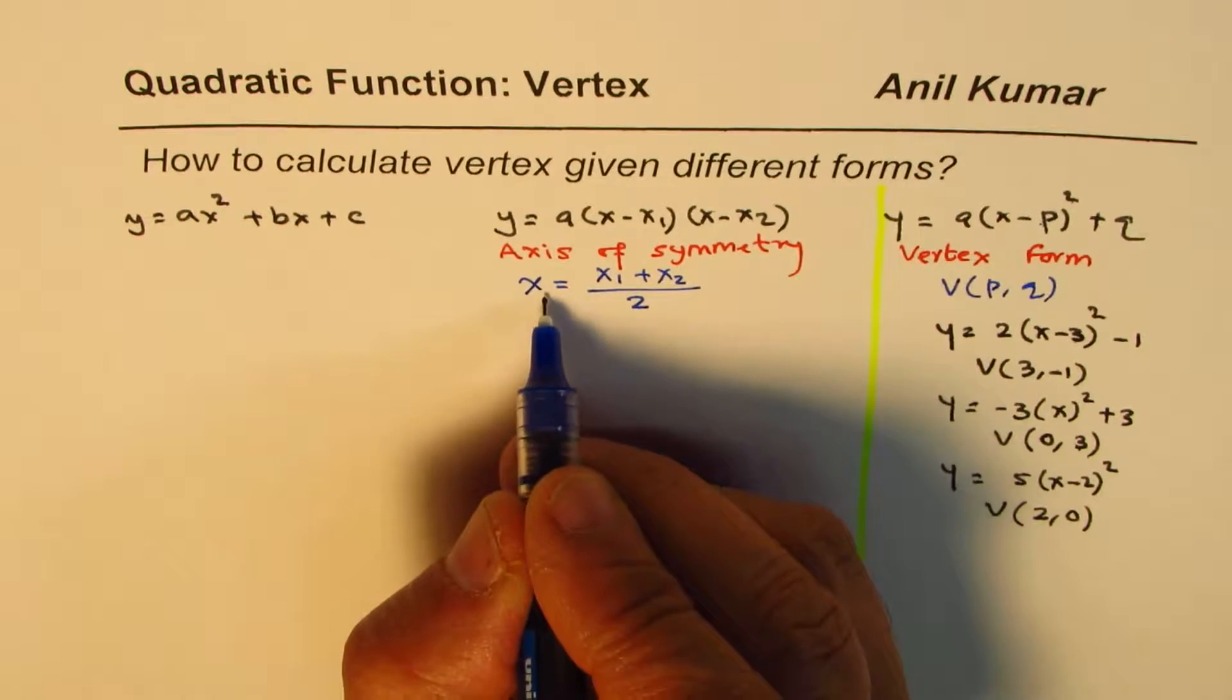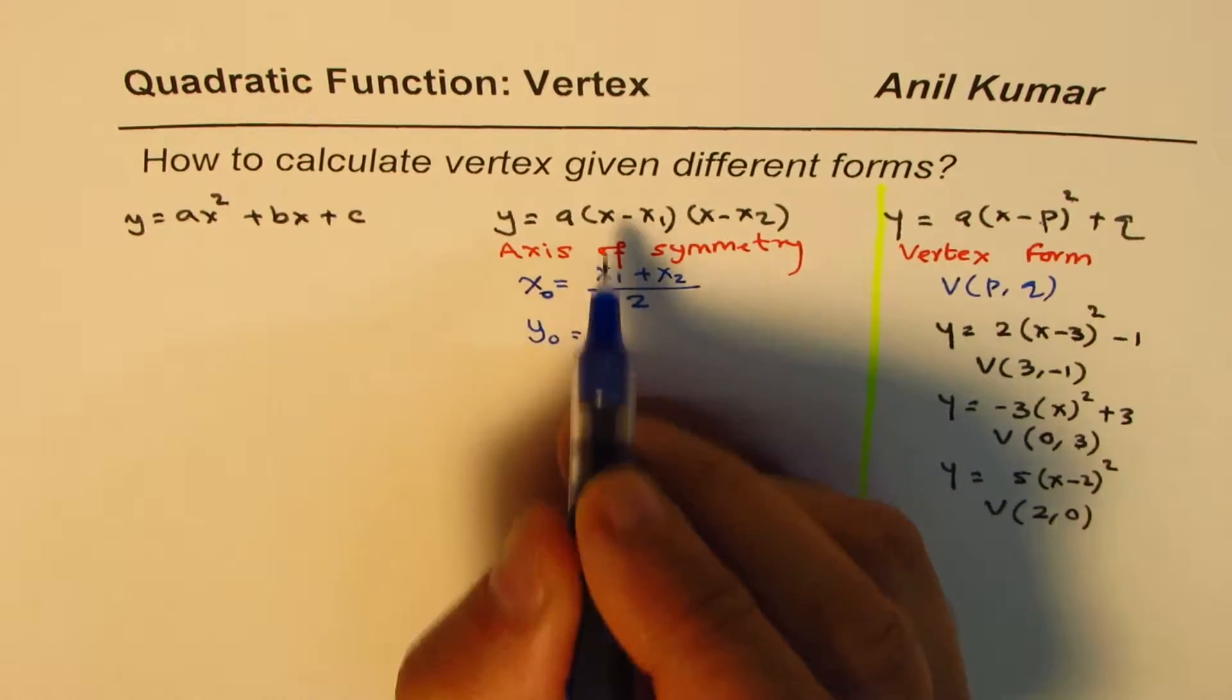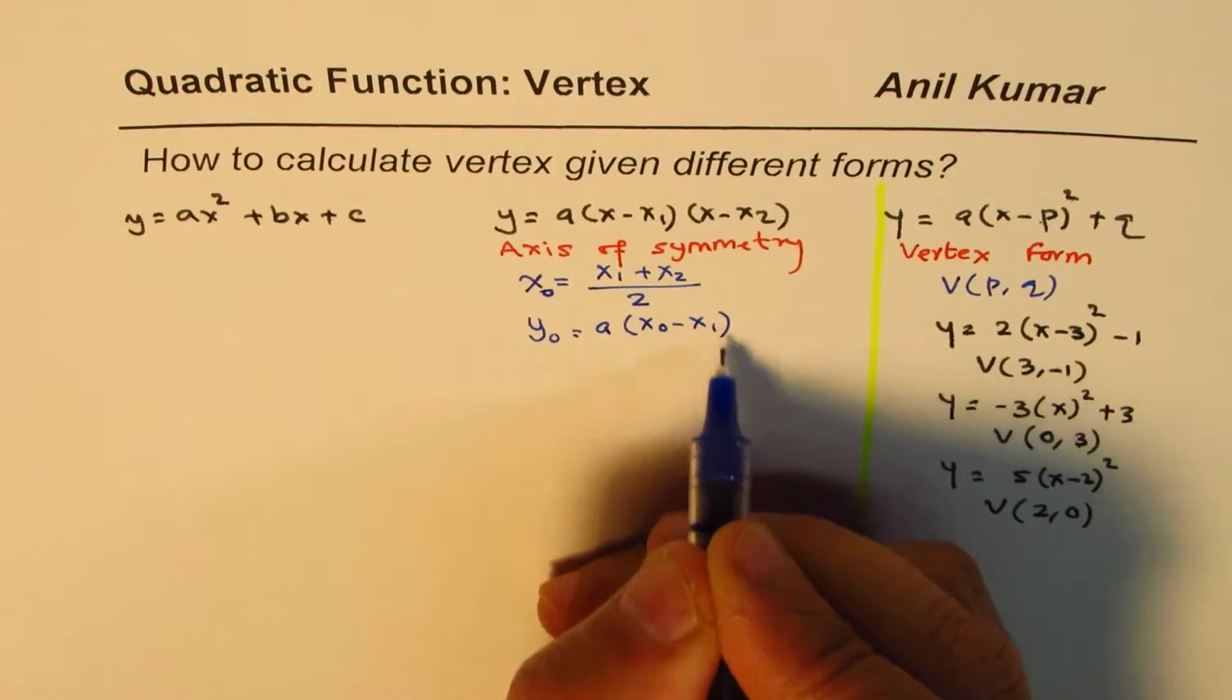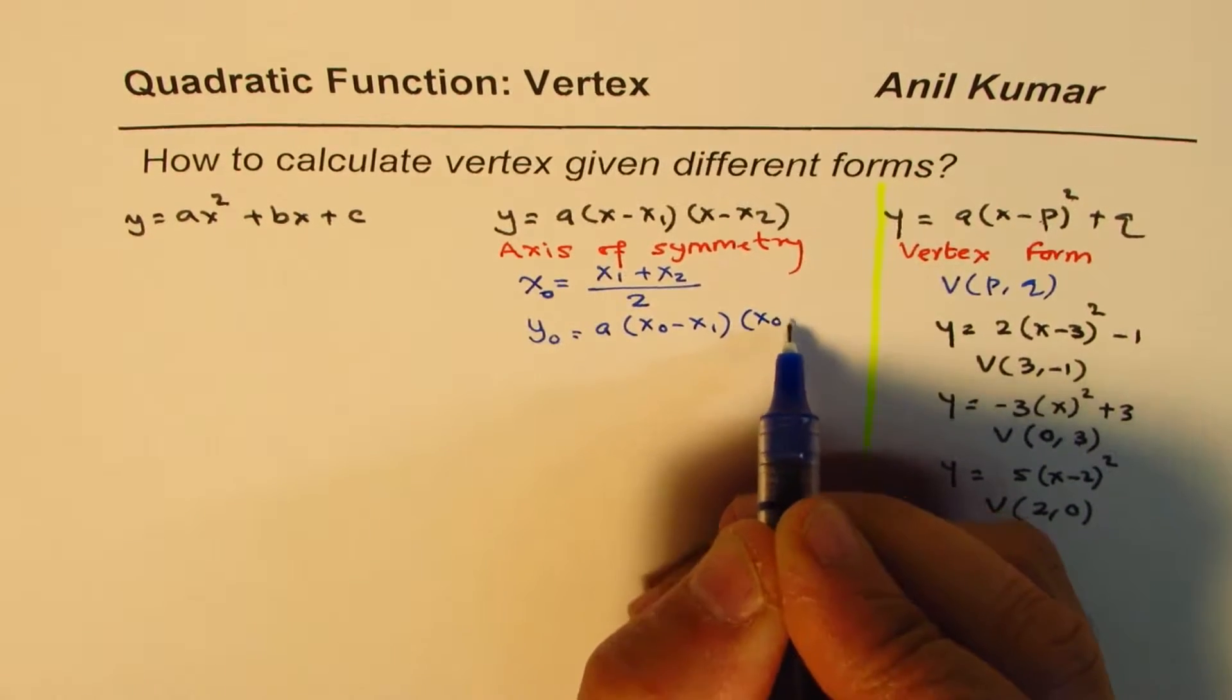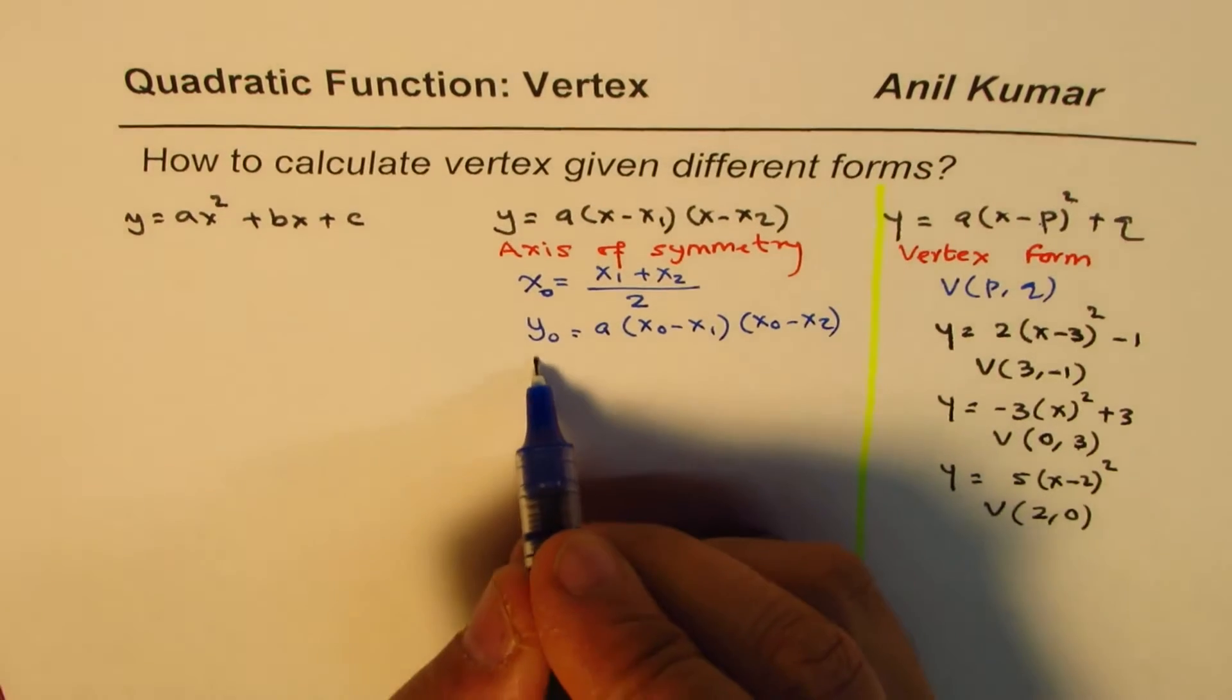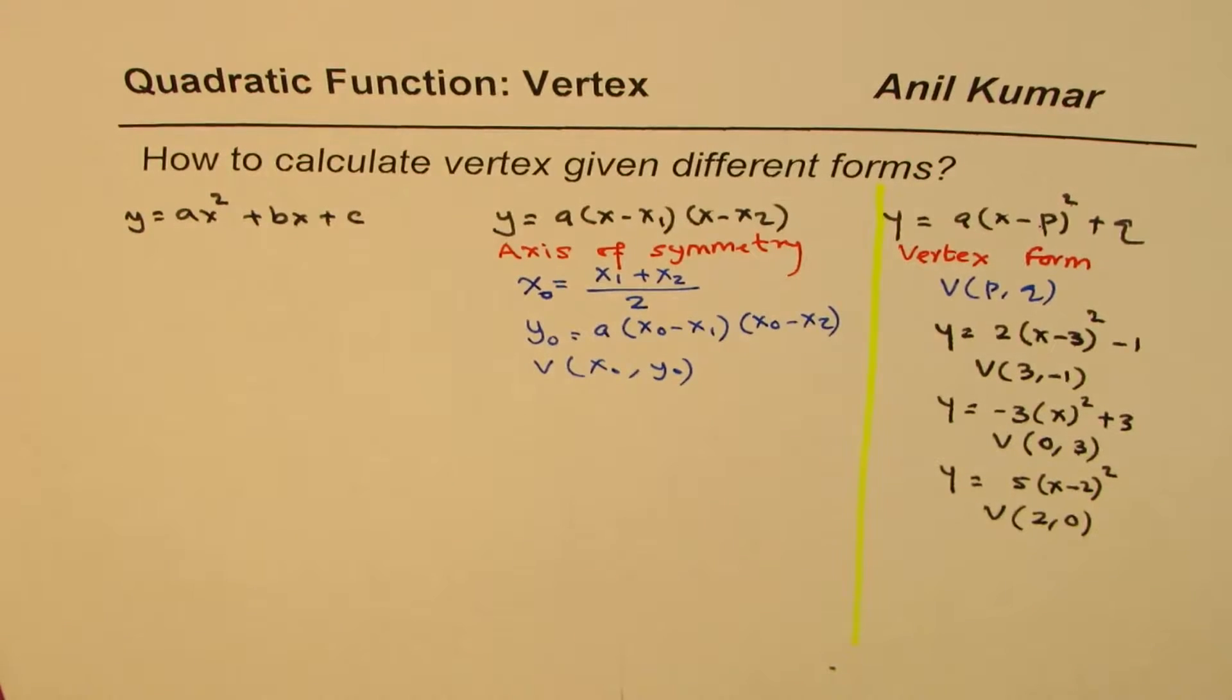Let's say this value is x0, then the y value of this vertex will be: substitute this here, a times (x0 minus x1) times (x0 minus x2) to get the y value. So we say the vertex is (x0, y0).